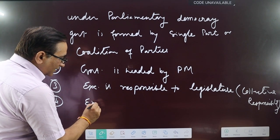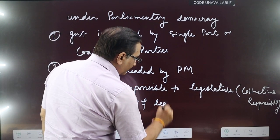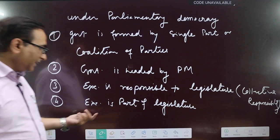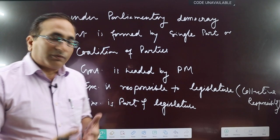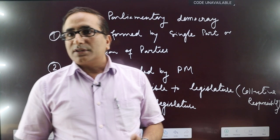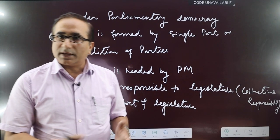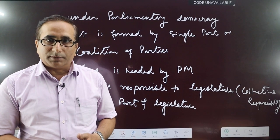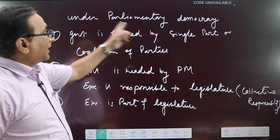Another feature is that the executive is part of the legislature. It means the executive, or the members of government, come from the legislature. Just as in the case of Britain or India, ministers have to be a member of any house of Parliament. There is a time limit — for six months they need not be, but after six months they have to be a member of any house of Parliament. That's why it is called: executive is part of legislature under Parliamentary Democracy.